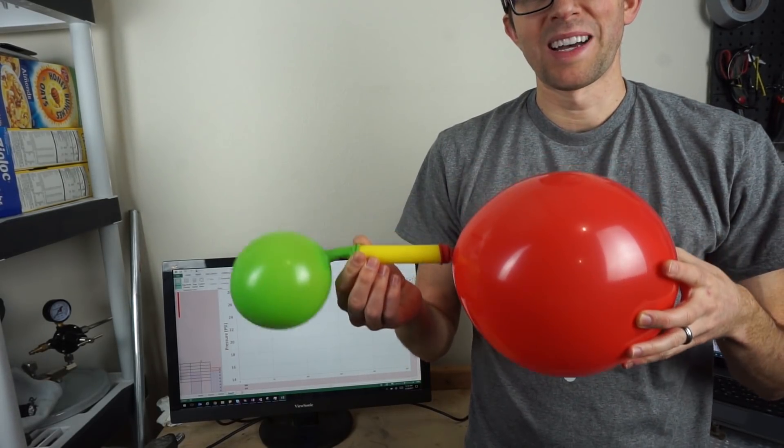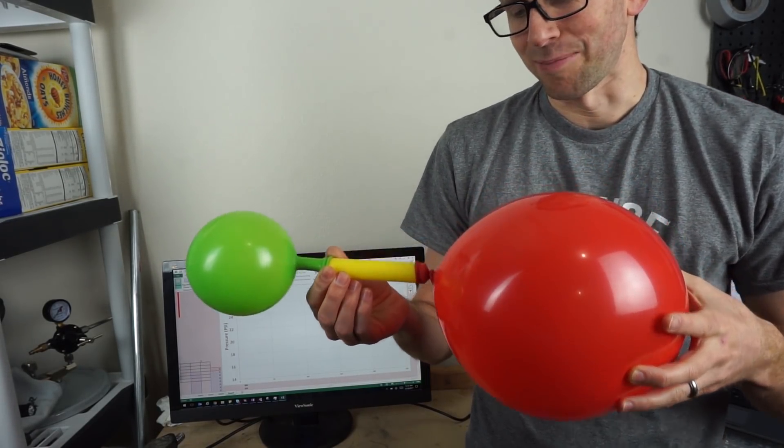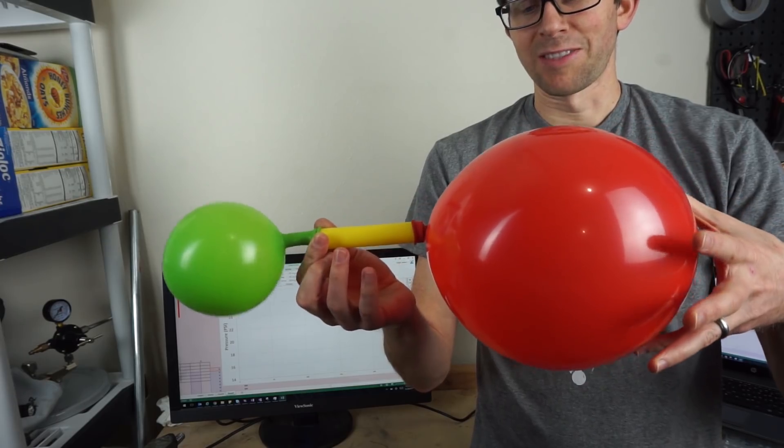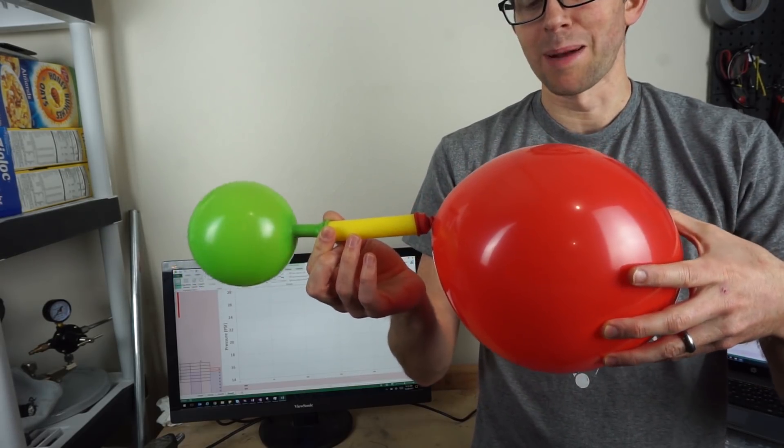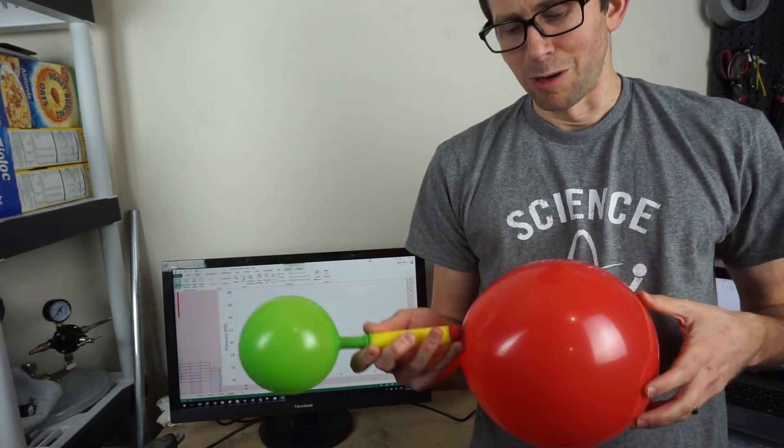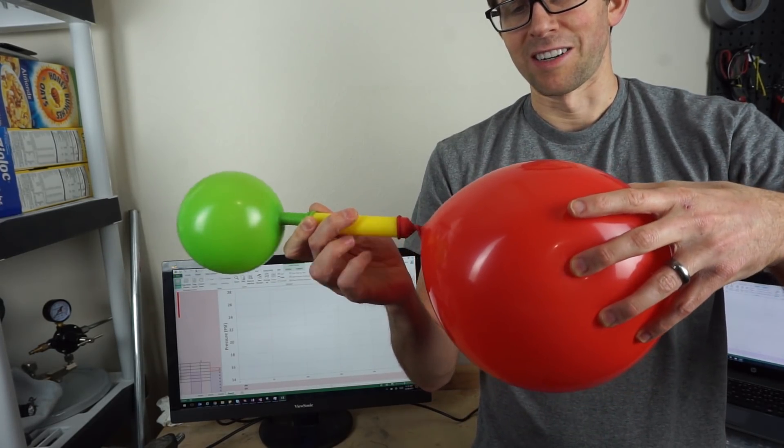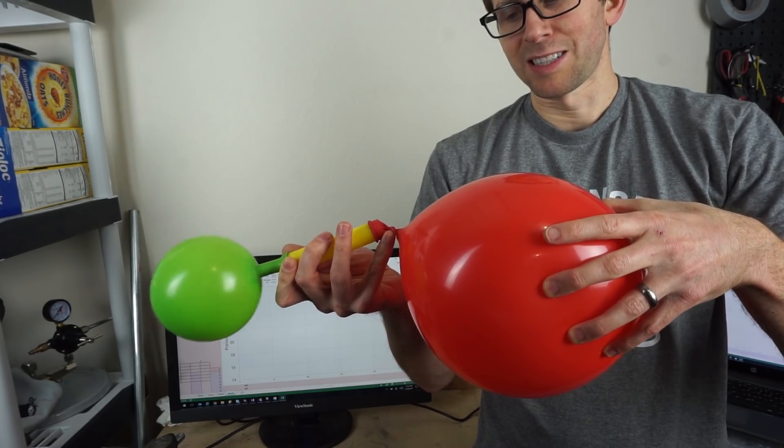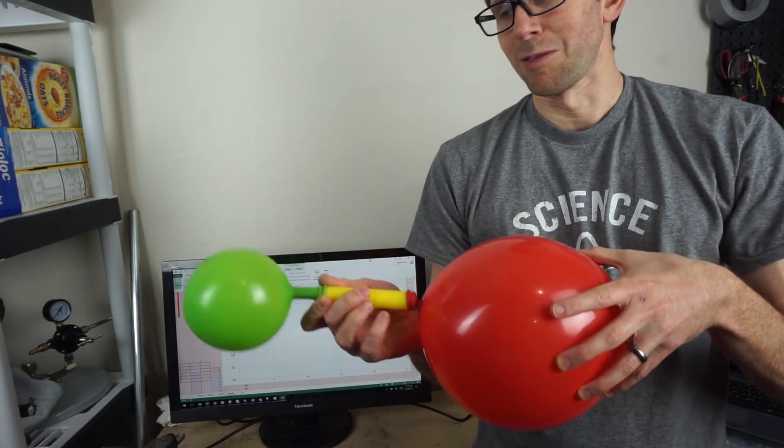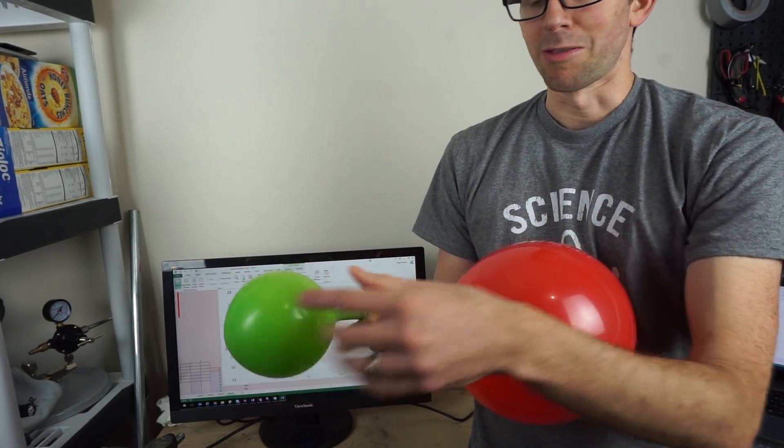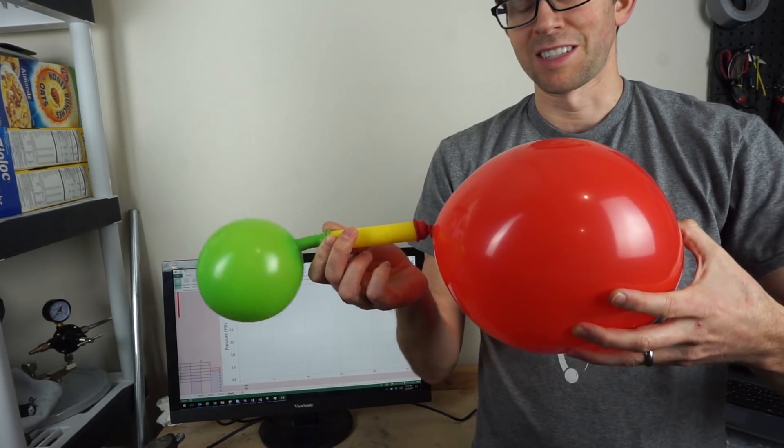Today I'm going to be showing you a bet that you can win every single time. So I have here a setup where I have two different balloons. They're the same type of balloon, only different colors. One balloon has more air than the other one, and I have it twisted off here. So the bet is when I release this twist here and let the pressures equalize, will the volume of the green balloon go up, down, or stay the same?